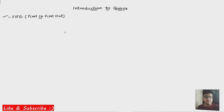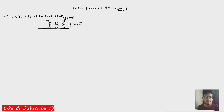Let me explain this rule with a simple example of a ticket counter. Let's say there are three people who want to buy a ticket, so they will form a queue. The first person inside the queue wants the ticket, so they take it. The queue starts from one end, which I'll call the front of the queue, and it ends at the other, which I'll call the rear end of the queue. The first person gets the ticket and leaves — so the deletion operation takes place at the front end.